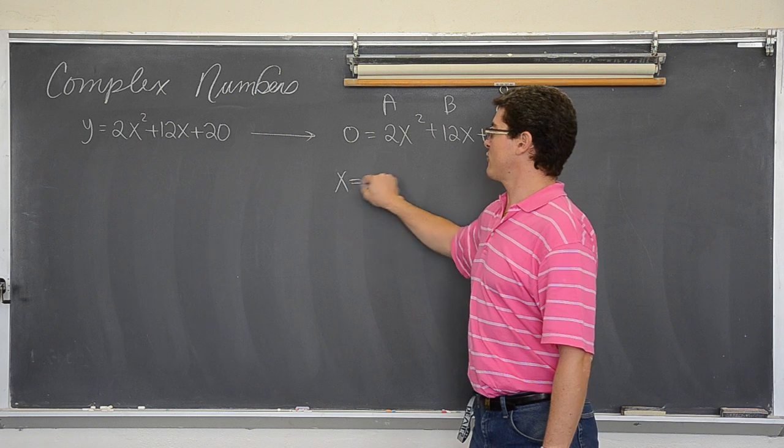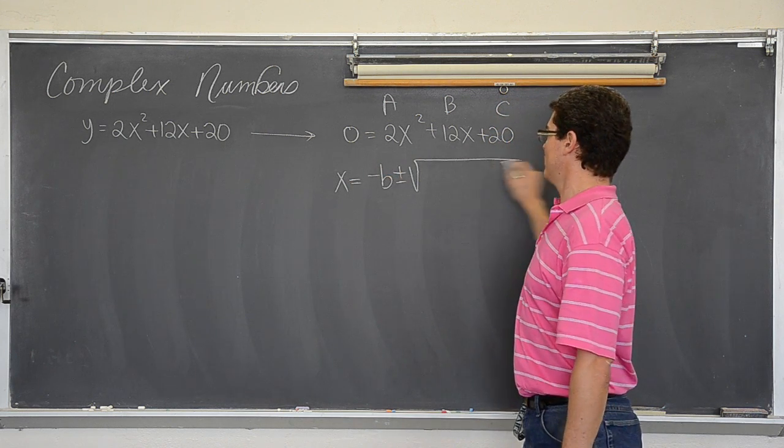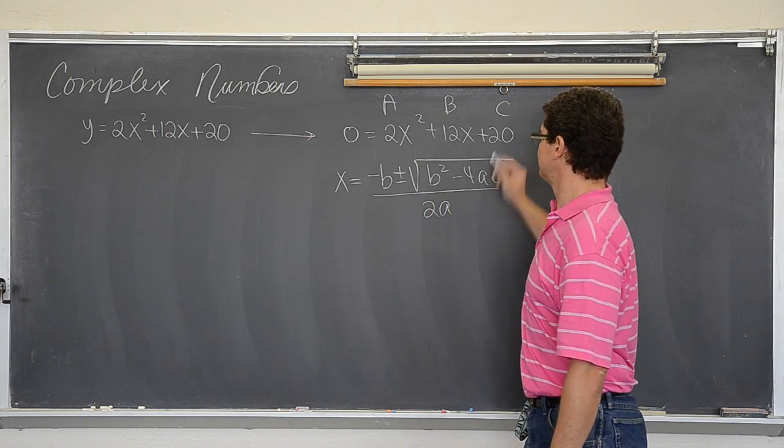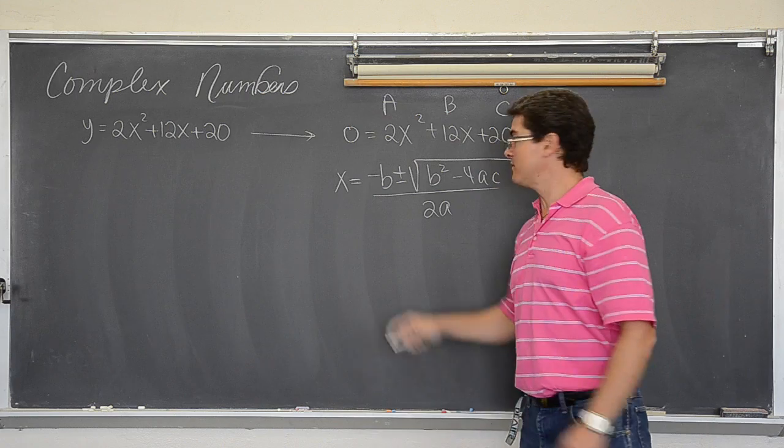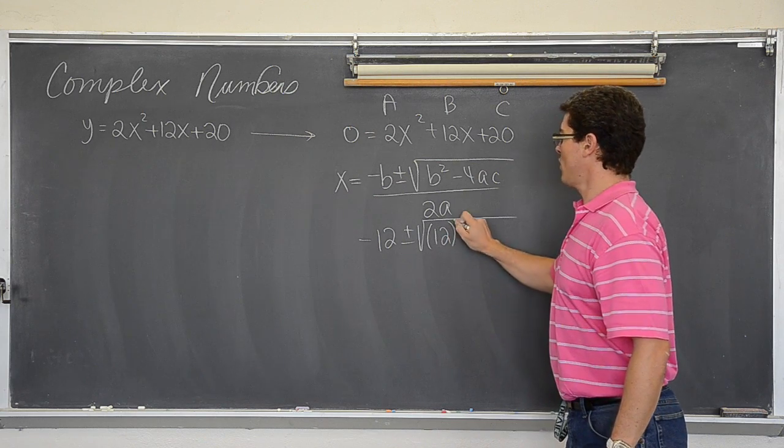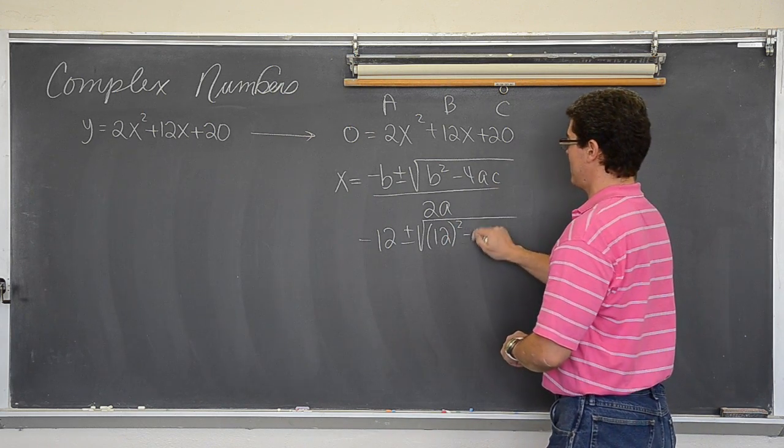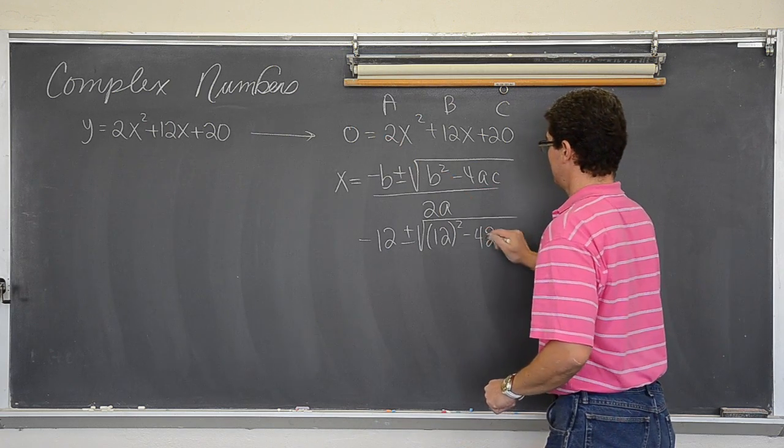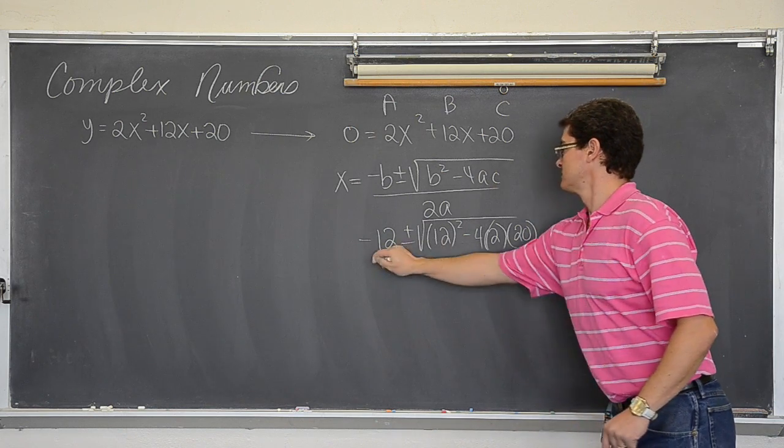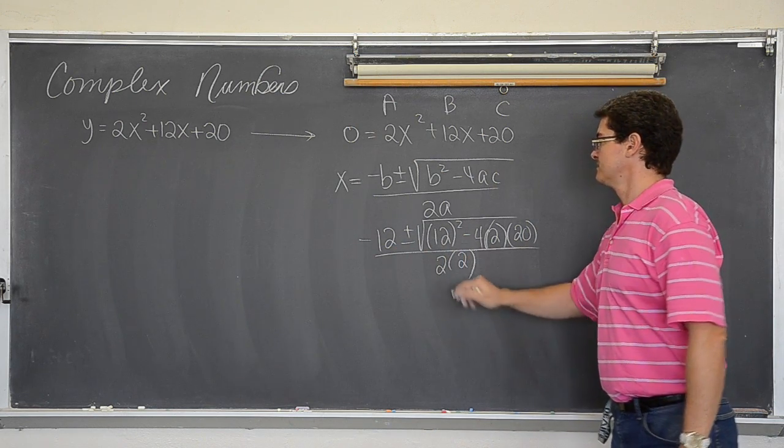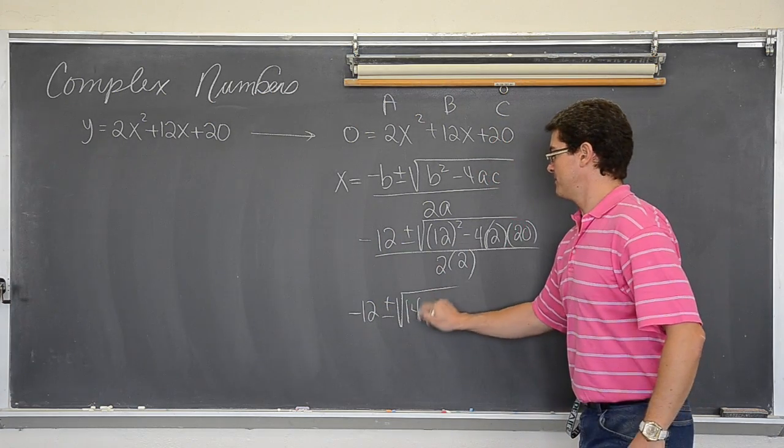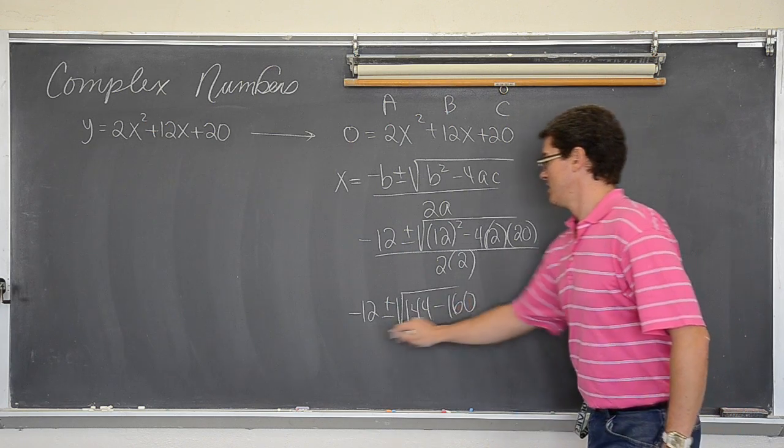We are going to solve this using the quadratic formula which is the opposite of b plus or minus the square root of b² minus 4ac all over 2a. Well b is twelve so negative twelve plus or minus the square root of b². Always use parenthesis when you do substitution. It helps you save on your sign errors. Minus 4a times c which is twenty all over 2a. So we have negative twelve plus or minus the square root. This is 144 minus 160 all over 4.